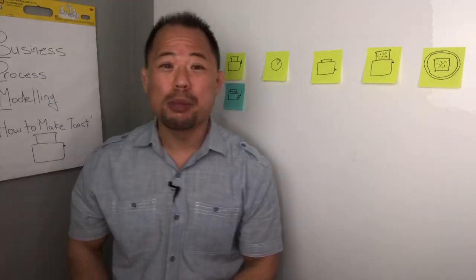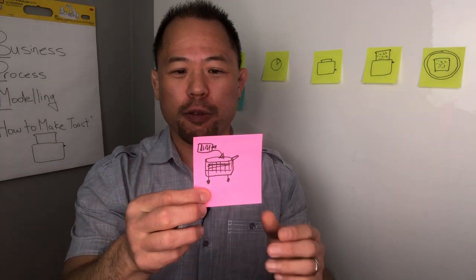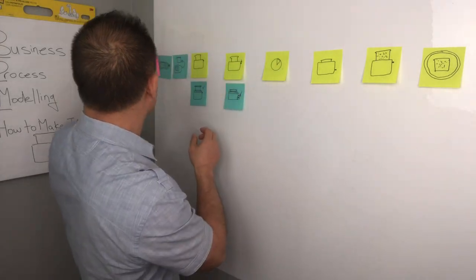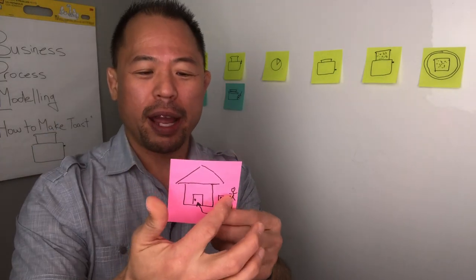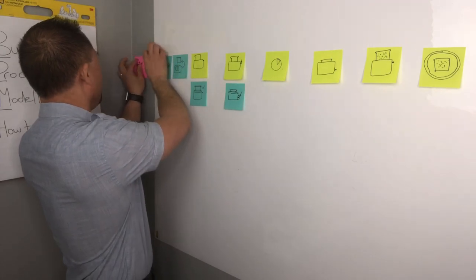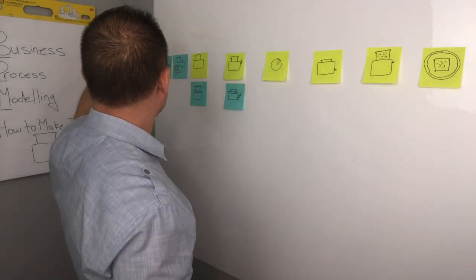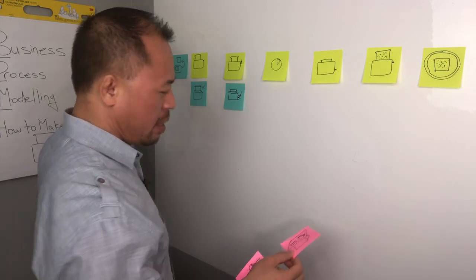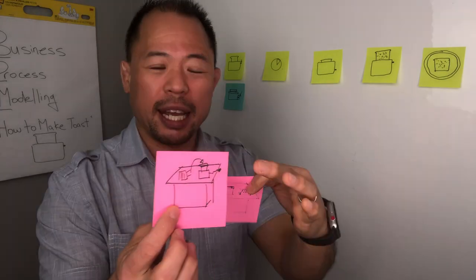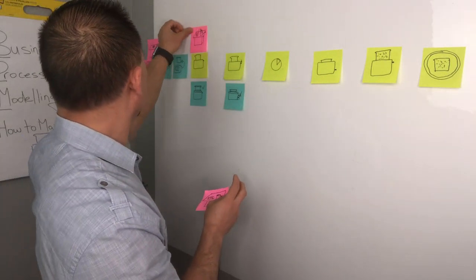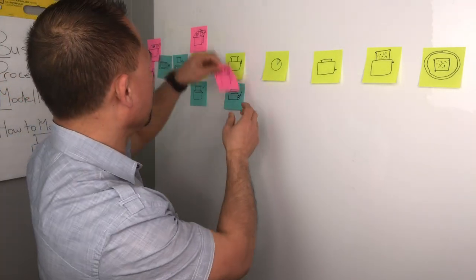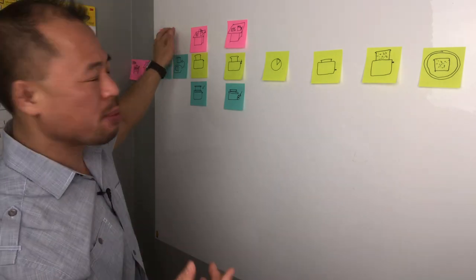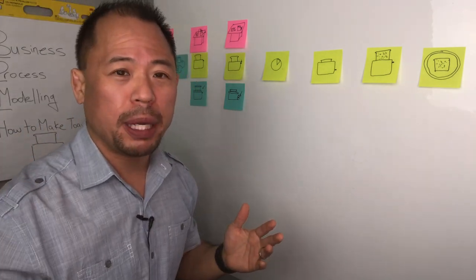Now let's bring in the third department with a third color. This one starts off even before everything else: putting the bread in a shopping cart — going out to get the bread first. Then they have bringing the bread to their house, followed by putting the bread on the counter, and then putting the bread in the toaster — which tiles with the existing step. Finally, pressing the plunger, which also tiles. Putting the bread on the counter is probably similar to one of the earlier steps as well. The process continues depending on how many people or departments you have.